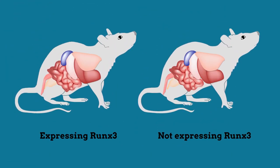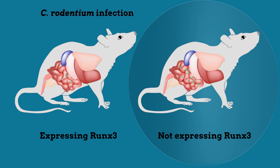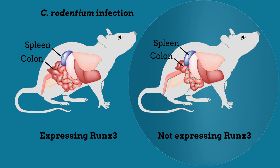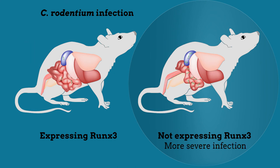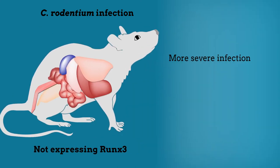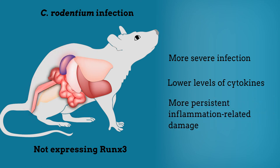Importantly, mice lacking RUNX3 expression in ILC1 and a subset of ILC3 cells were more susceptible to infection with the bacterium Citrobacter rodentium. The mice without RUNX3 had higher counts of the bacterium in the spleen and shorter colons, indicating more severe infection. The mice also expressed lower levels of the cytokines that activate the appropriate immune response to pathogen attack, and they exhibited more persistent inflammation-related damage after infection.